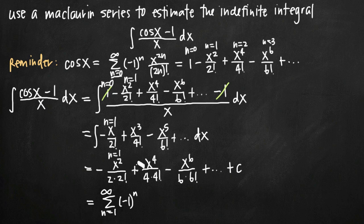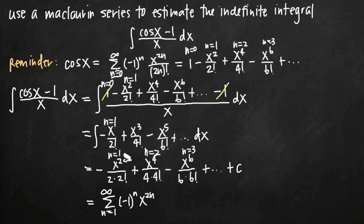For the x terms — x squared, x to the 4th, x to the 6th — these came from n equals 1, 2, and 3 respectively. The exponent is always 2 times the n value: 2 times 1 is 2, 2 times 2 is 4, 2 times 3 is 6. So we have x raised to the 2n power. In the denominator, the values 2, 4, 6 are also 2n, and for 2 factorial, 4 factorial, 6 factorial we have quantity 2n factorial. So our series representation is the sum of negative 1 to the n, times x to the 2n, divided by 2n times quantity 2n factorial.